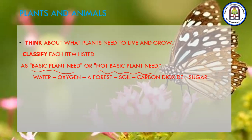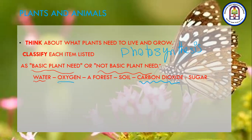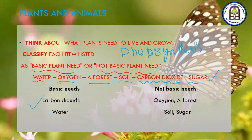Here are the needs to classify: water, oxygen, forest, soil, carbon dioxide, and sugar. Water is a very important need for the plant because it needs it in the process of photosynthesis. Carbon dioxide is also a basic component in photosynthesis. Oxygen is made or released by the plant. A forest? No, the plant does not need a forest to live. Soil? Some plants can grow without soil. Sugar is produced by the plant during photosynthesis. So the basic needs are carbon dioxide and water. The non-basic needs are oxygen, a forest, sugar, and soil.